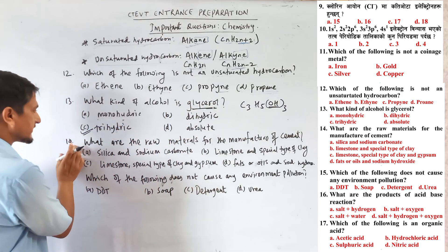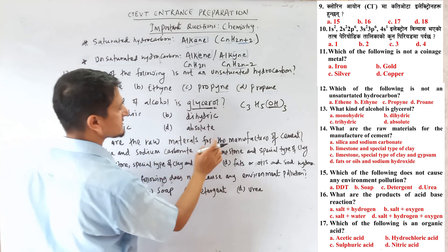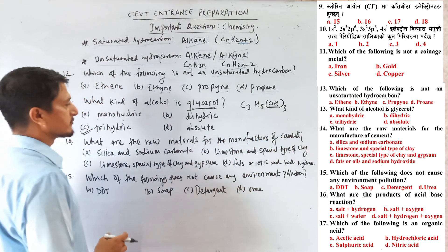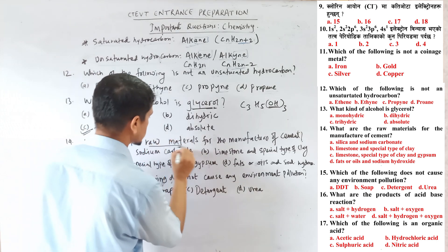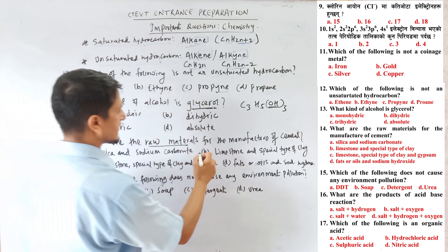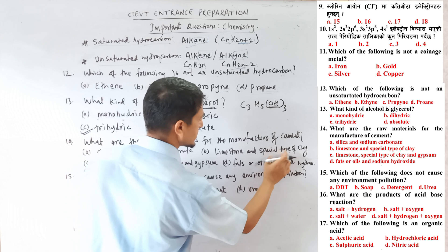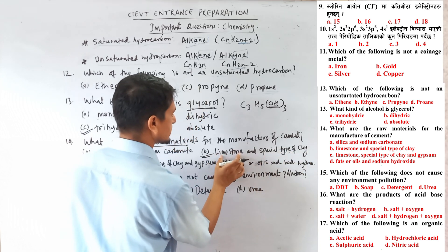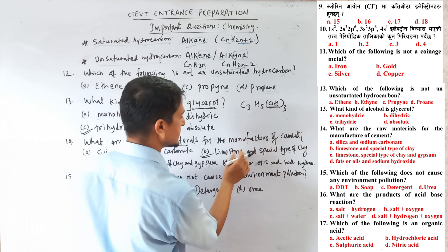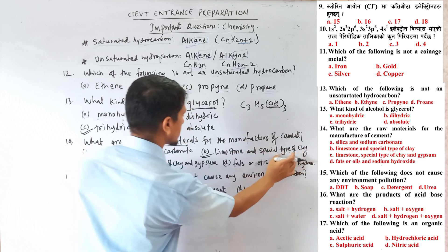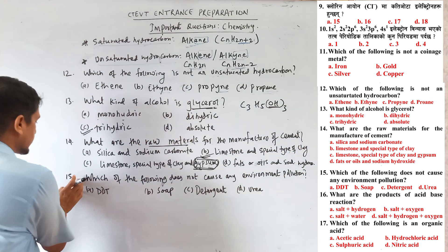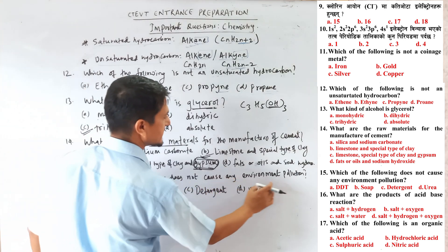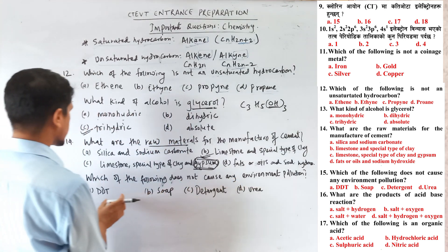Question number 14: What are the raw materials for manufacture of cement? Limestone (CaCO3) and a special type of clay are the correct answer. Question number 15: Which of the following does not cause any environmental pollution? The correct answer is soap.